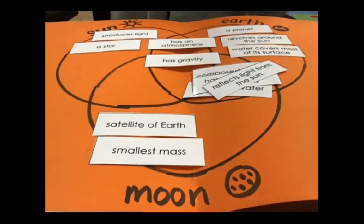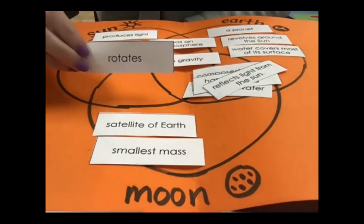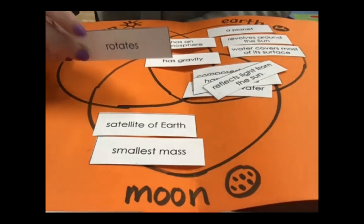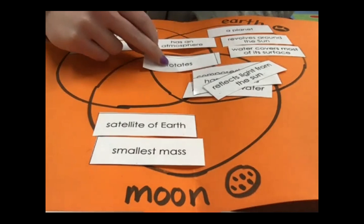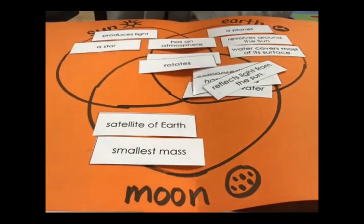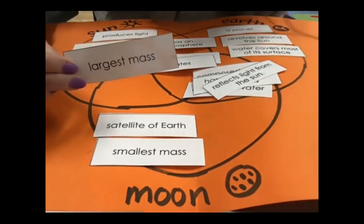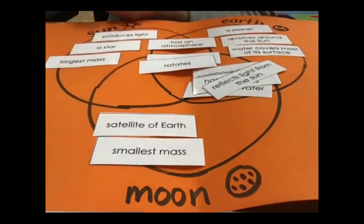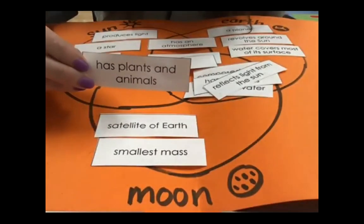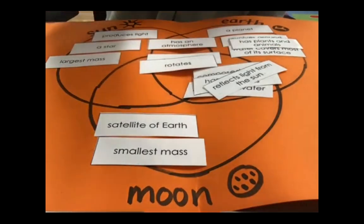A couple more. 'Rotates' — remember, this would be all three. Those are the only two things all three have in common: they all have gravity and they all rotate. 'Largest mass' — that would be the sun. 'Has plants and animals' — that would be the earth. All right, I hope you had fun comparing and contrasting the sun, earth, and moon. I will see you guys next week. Bye-bye.